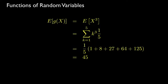If the random variable is uniformly distributed over its range, then its probability mass function would be equal to 1/5 over that range, and the expected value for the random variable raised to the power of 3 would be equal to 45.